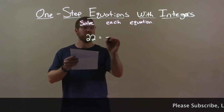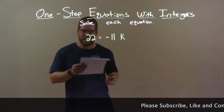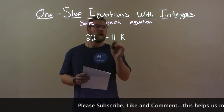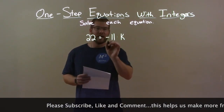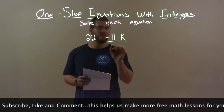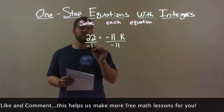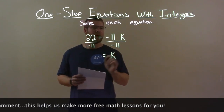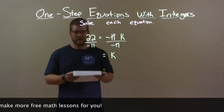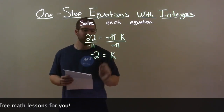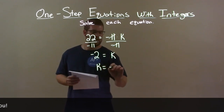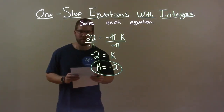22 equals negative 11k. First thing I want to do is get k by itself. I have multiplication between negative 11 and k. Opposite of multiplication is division. So I divide both sides by negative 11. This gives me k by itself because the negative 11s cancel. 22 divided by negative 11 is negative 2. So we have k by itself, and we can write k equals negative 2 as our final answer.